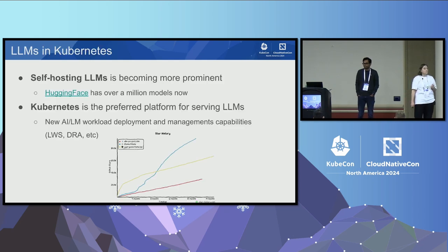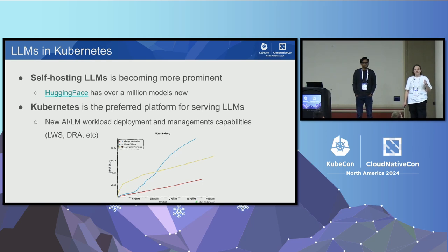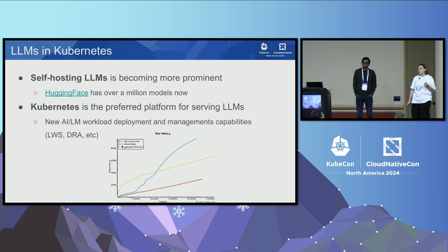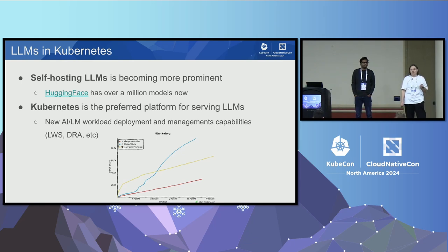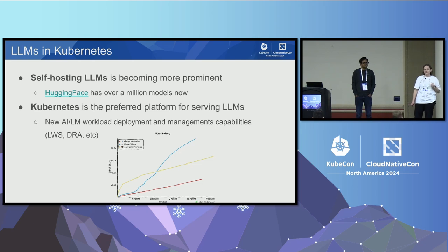LLMs are getting more popular, and self-hosting LLMs is also getting very popular. Hugging Face now has more than a million models hosted with a very active community. Kubernetes is becoming a preferred platform to host these workloads, and new capabilities are being introduced specifically for AI/ML workloads.